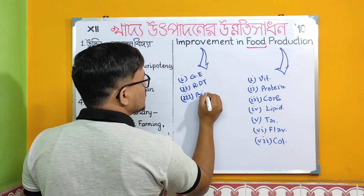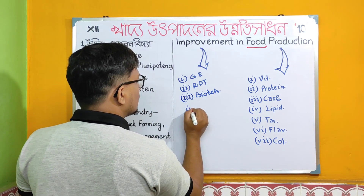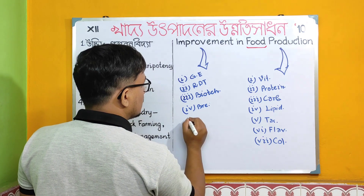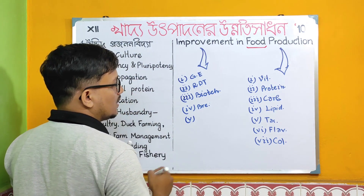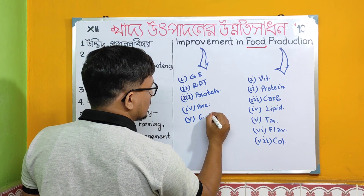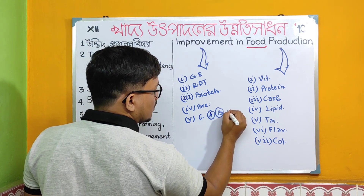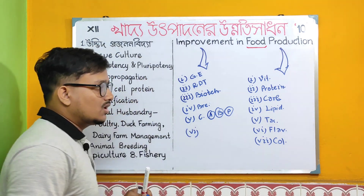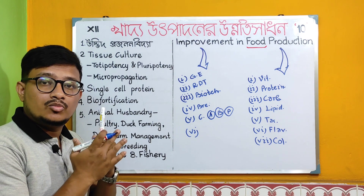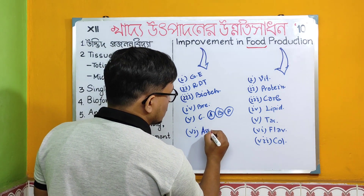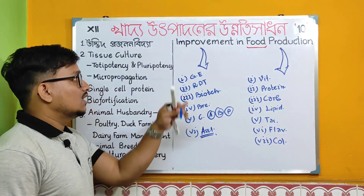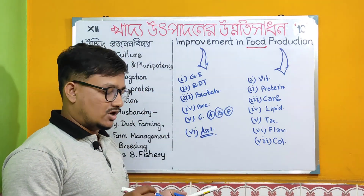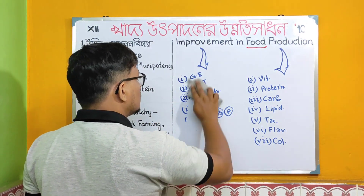Key approaches include biotechnology, fourth point is the body, fifth is breeding system, culture system — both animal and bacterial culture system and plant culture system. Sixth is breeding assessment. Assessment in the field of food production — what approaches are used for improvement in food production — these are the following.